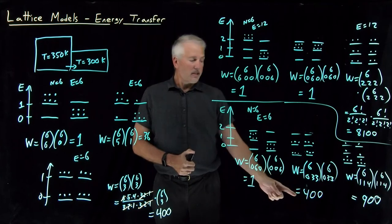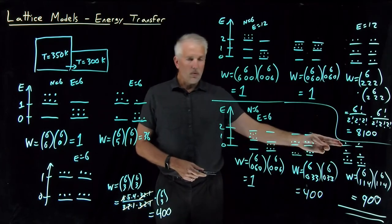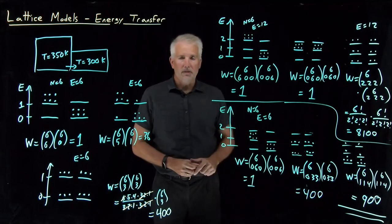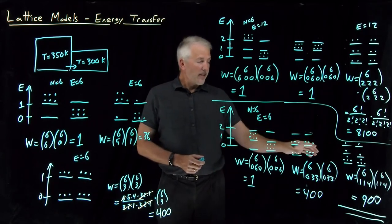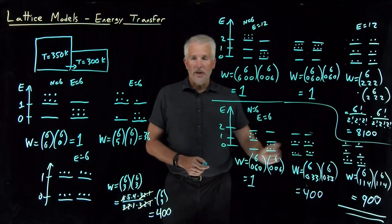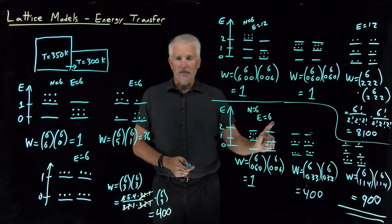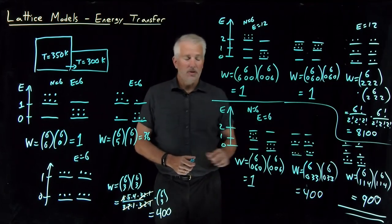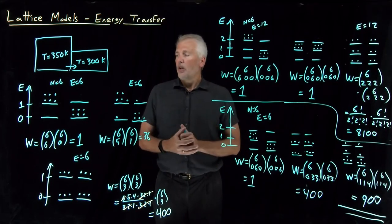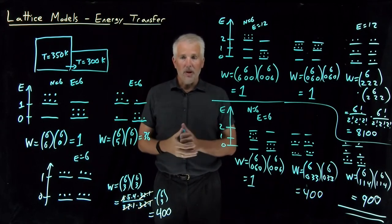That multiplicity of 900 turns out to be larger than the multiplicity of 400 for the equal-energy distribution. This macrostate — four in the ground state, one in the middle, one in the upper — is the macrostate with the highest multiplicity, and therefore most likely. The surprising thing is I don't have a perfectly even distribution of energy. I've got more molecules in the ground state than in the upper states. That turns out to be because energy is relatively scarce in the system.